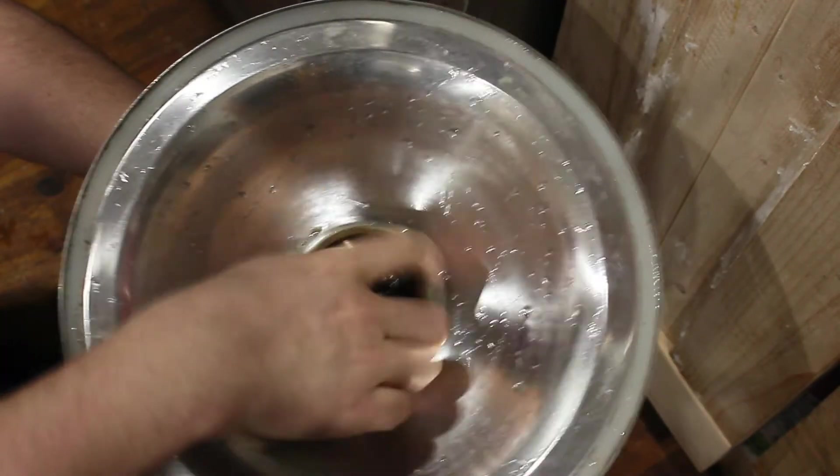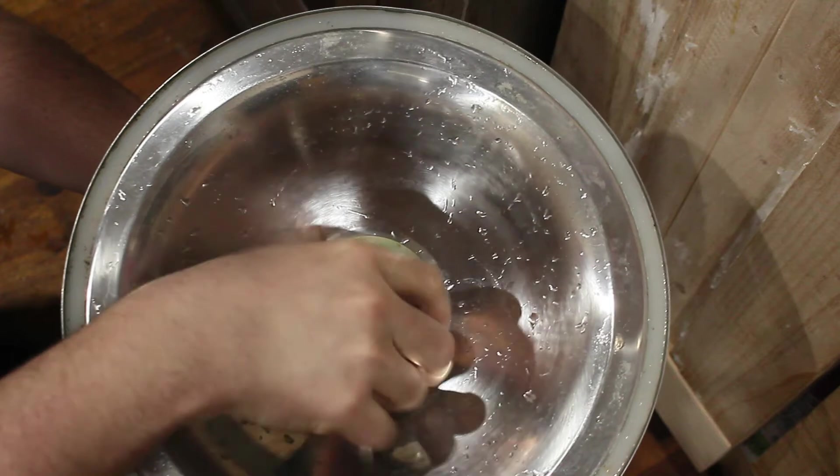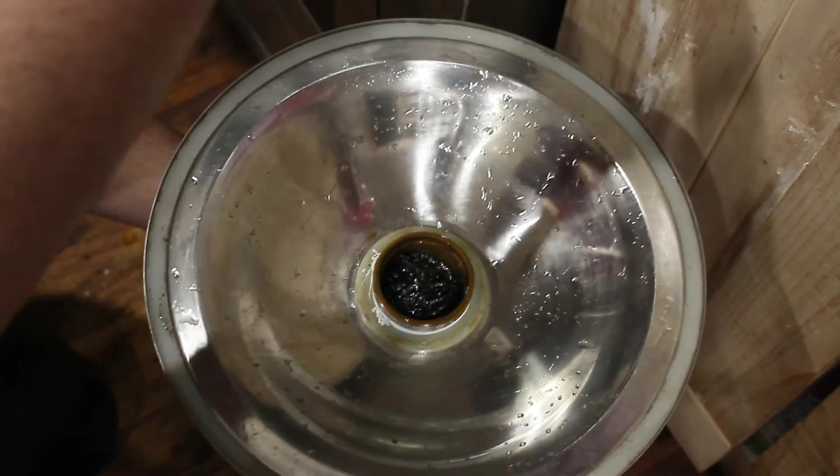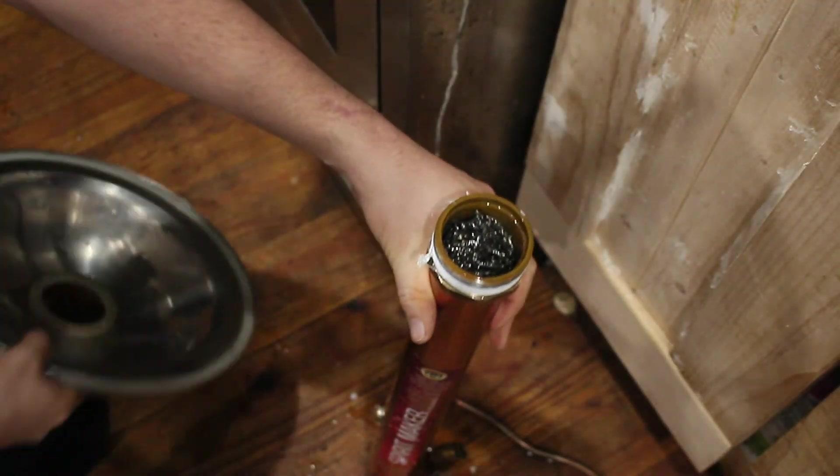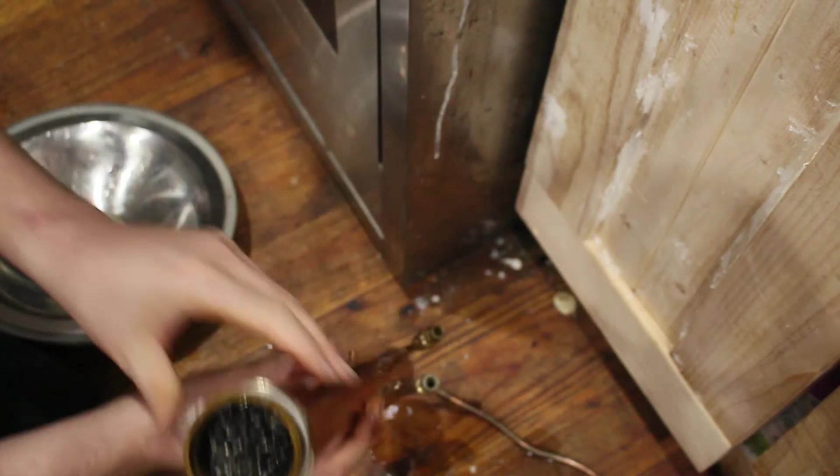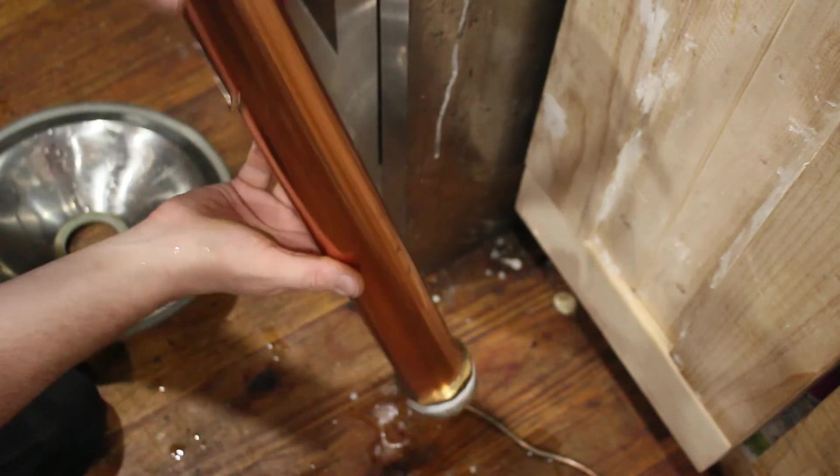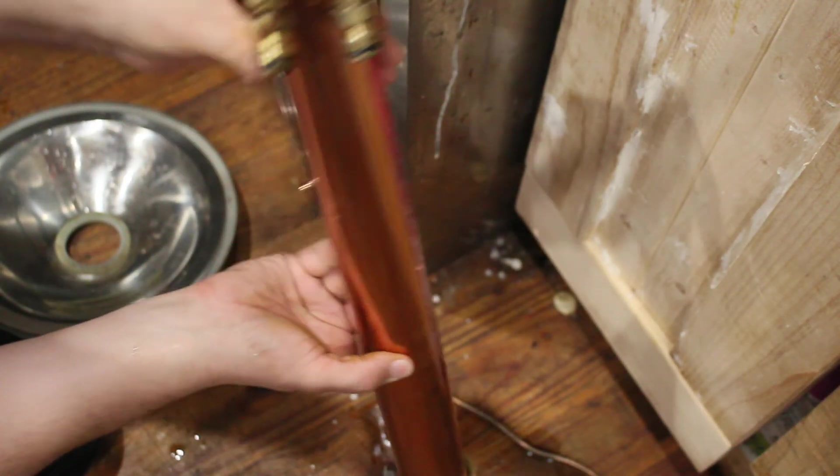Ideally you're going to run warm to hot water through the column still from the top down to the bottom, effectively reversing the routine you use to extract your alcohol. Let it dry thoroughly and then place into storage until needed again.